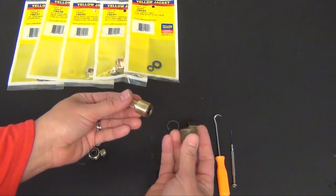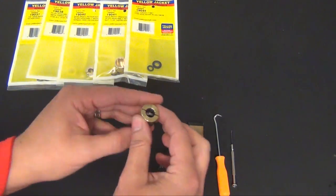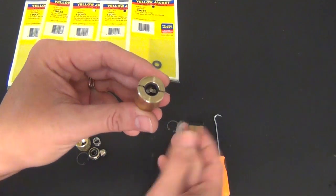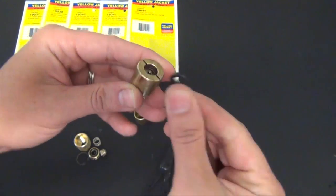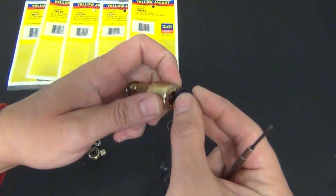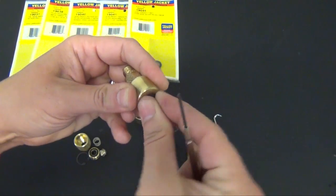We're now going to remove the nut and at this time if you're just replacing the O-ring you could take your small screwdriver and remove and replace your O-ring.